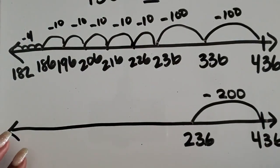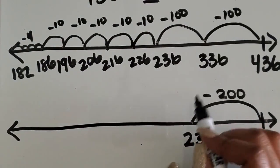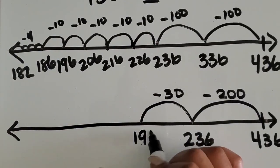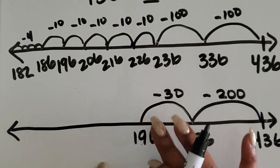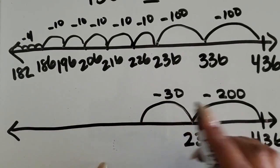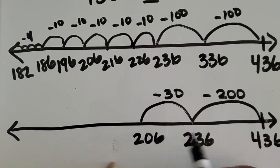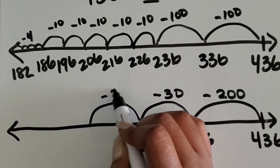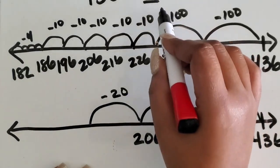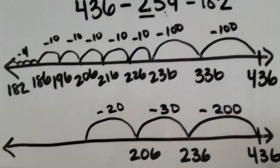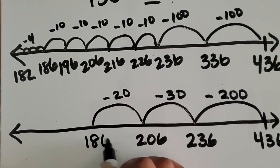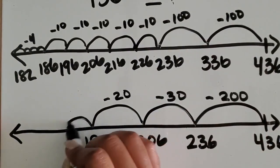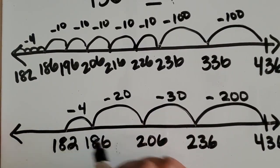So now I have the five tens. I know if I take thirty away, that would give me two hundred six. Then if I take twenty away — because twenty and thirty equals the fifty — that will give me one hundred eighty-six. And then I need to subtract four, which gives me one hundred eighty-two.